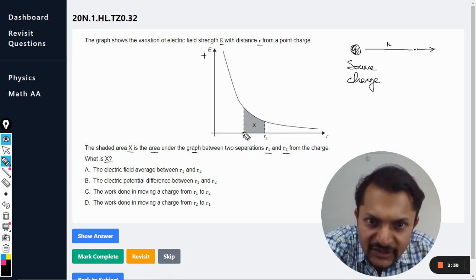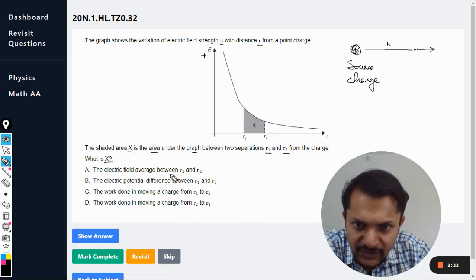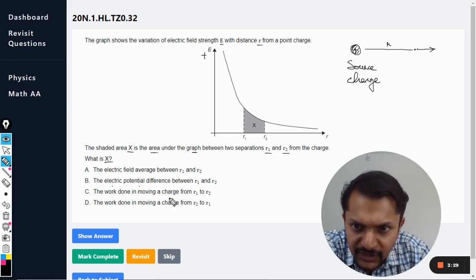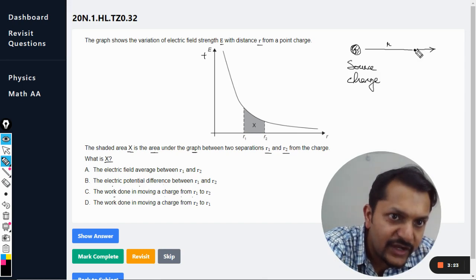It is moving from r1 to r2. Option A: the electric field average between r1 and r2 - no, this is not an average. Option B: electric potential difference between r1 and r2. Option C: work done in moving a charge from r1 to r2.